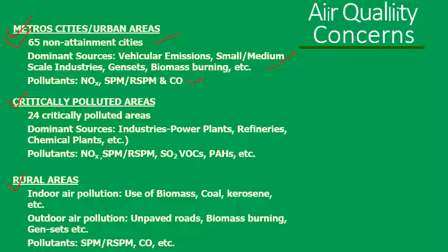Critically polluted areas are heavily polluted — 24 such areas have been identified. The dominant sources of pollution are industries, power plants, refineries, chemical plants, etc. The major air pollutants found are NOx, solid particulate matter, SO2, volatile organic compounds, and PAH. PAH is a volatile organic compound that mixes with the air and pollutes it.